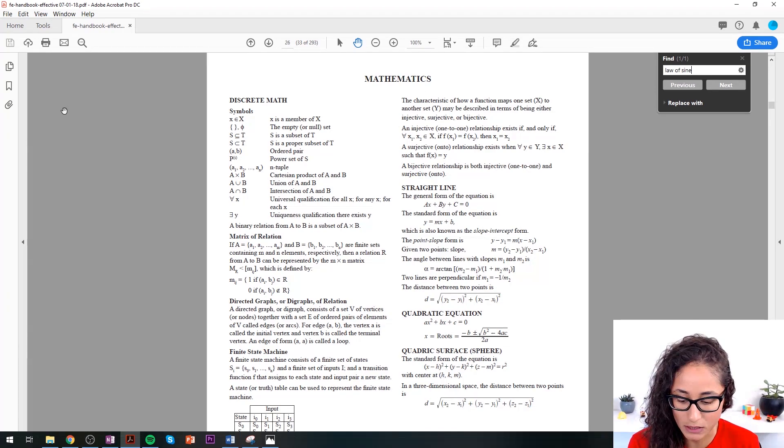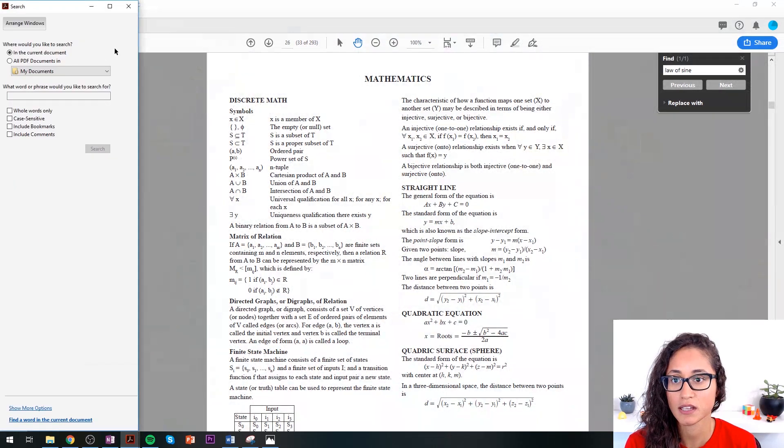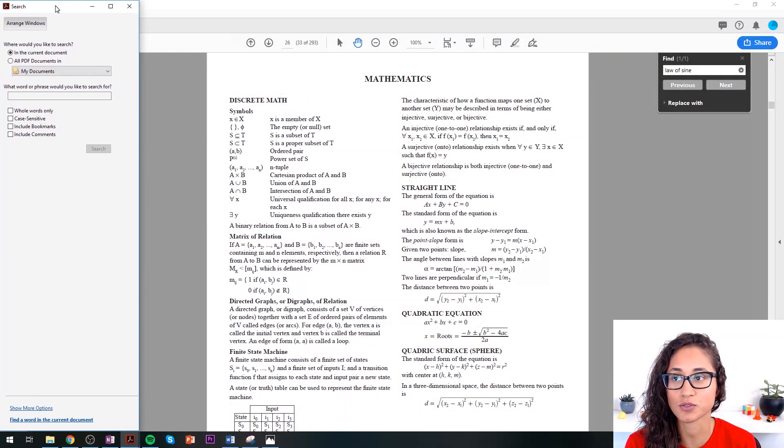So the way we do it is you do Ctrl+Shift+F. So then this bar comes up. This is exactly how the screen of your FE exam is going to look like. You're going to have the search bar here, you're going to have the PDF file here, and then you have your questions somewhere here. This is all going to be there already. And then you're going to have a timer.